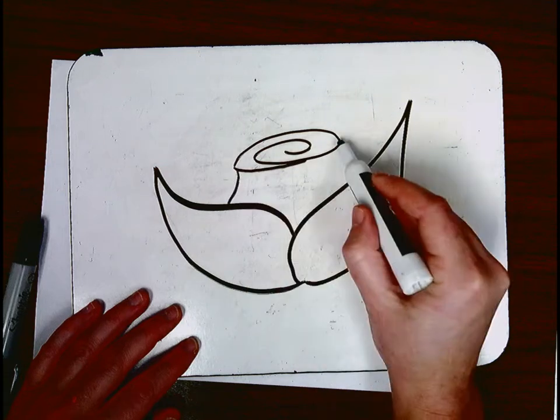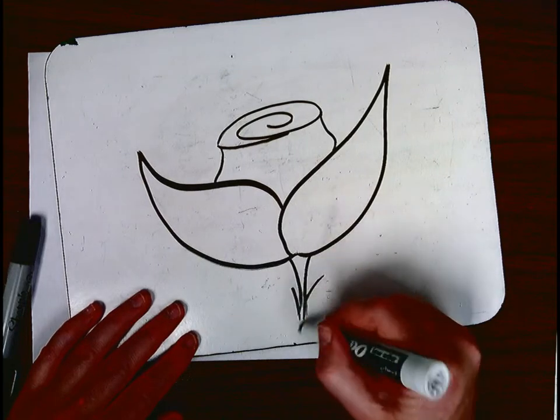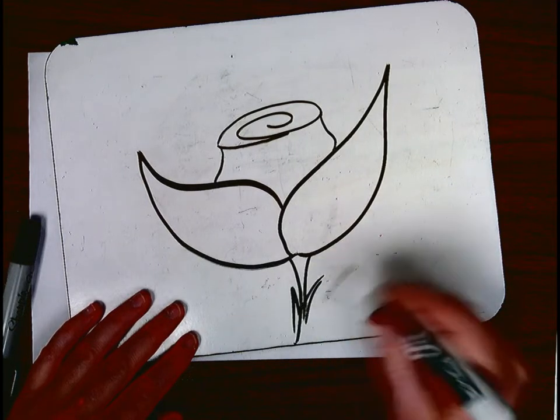Then a skinny line to a big line, and you can put the stem if you wanted, some thorns. You don't have to though.